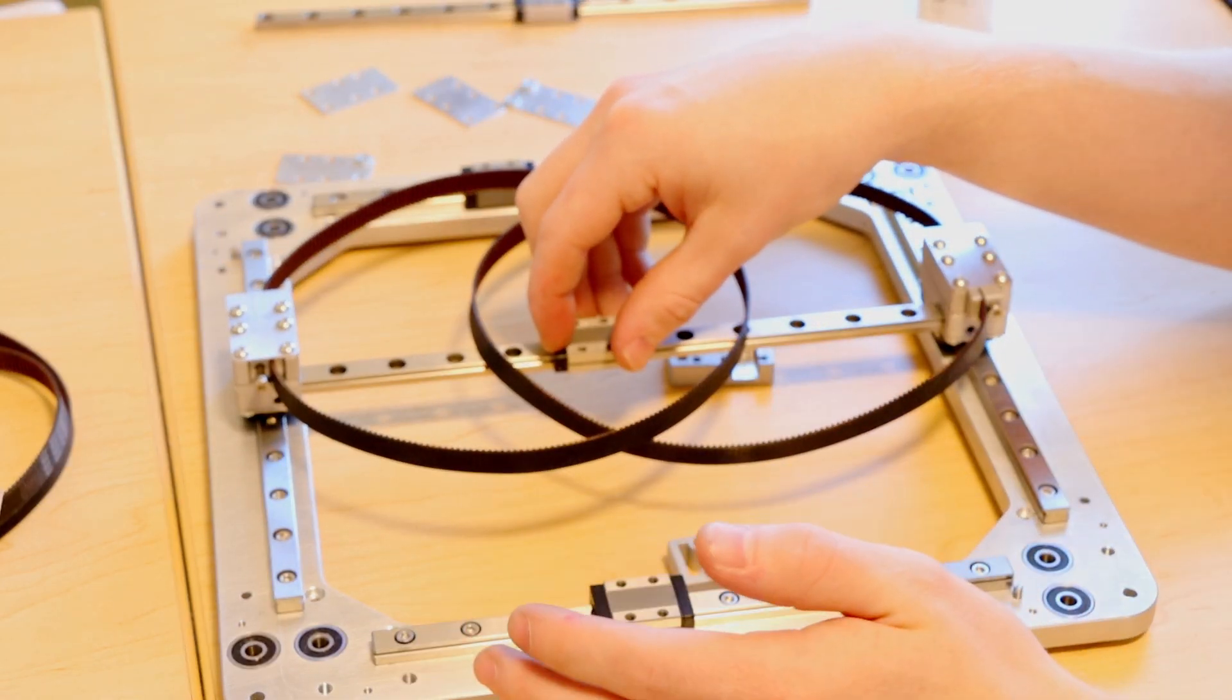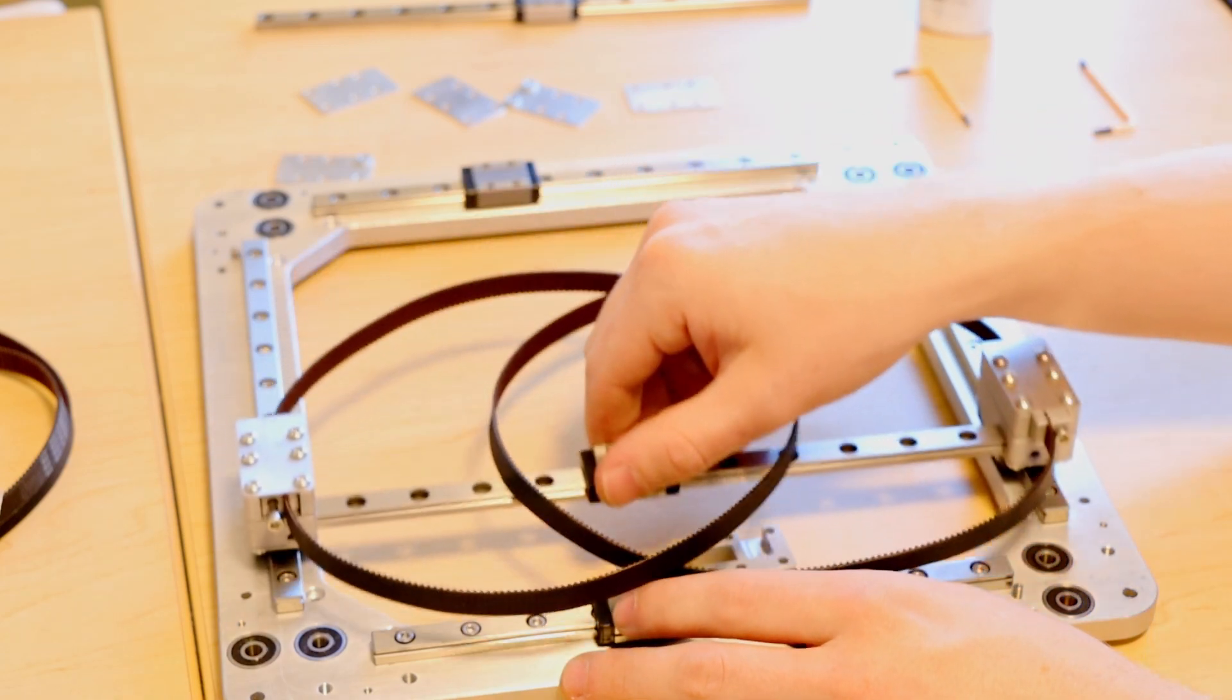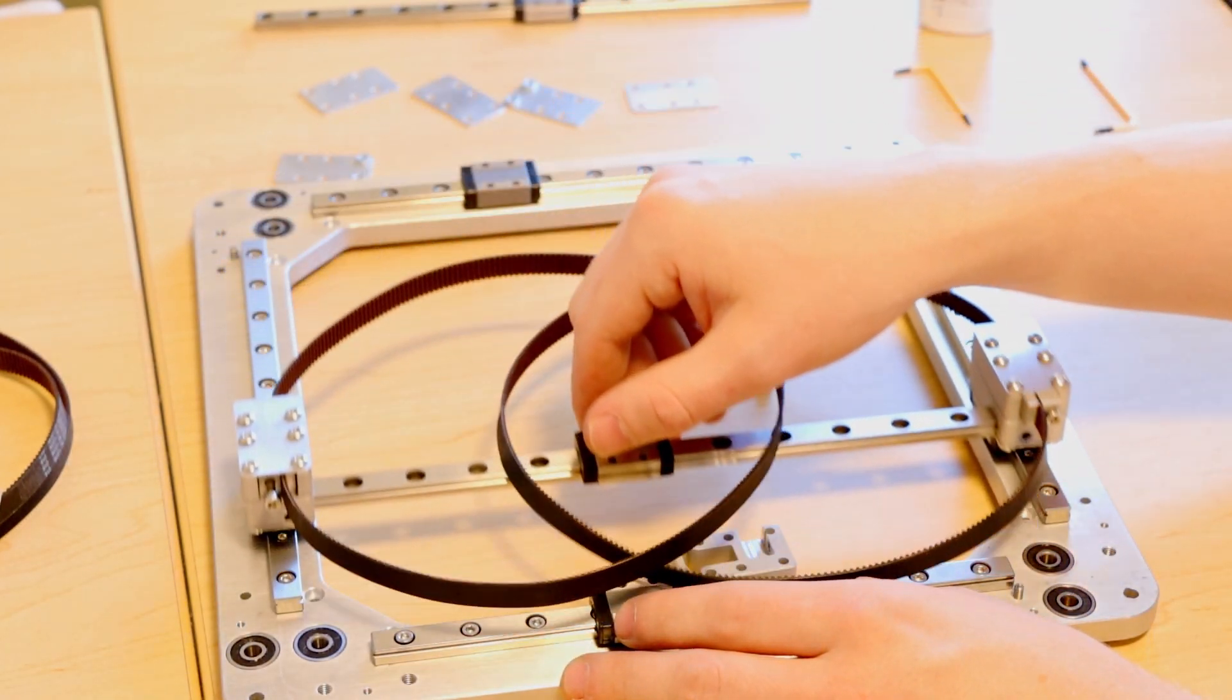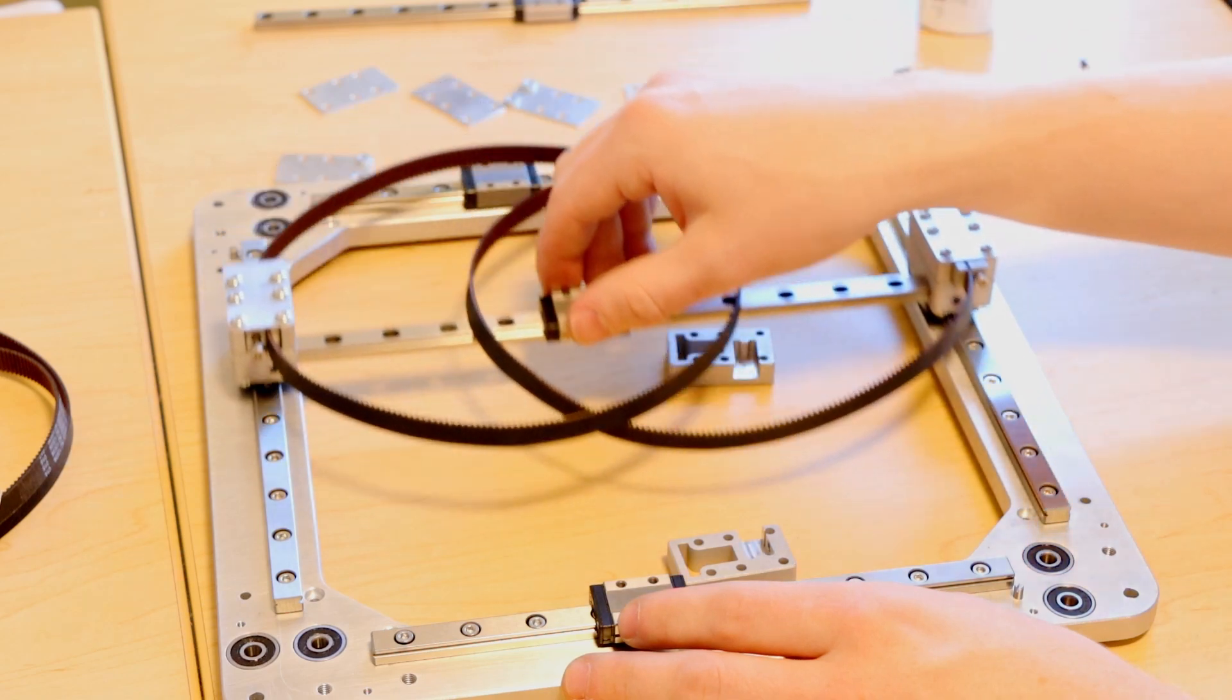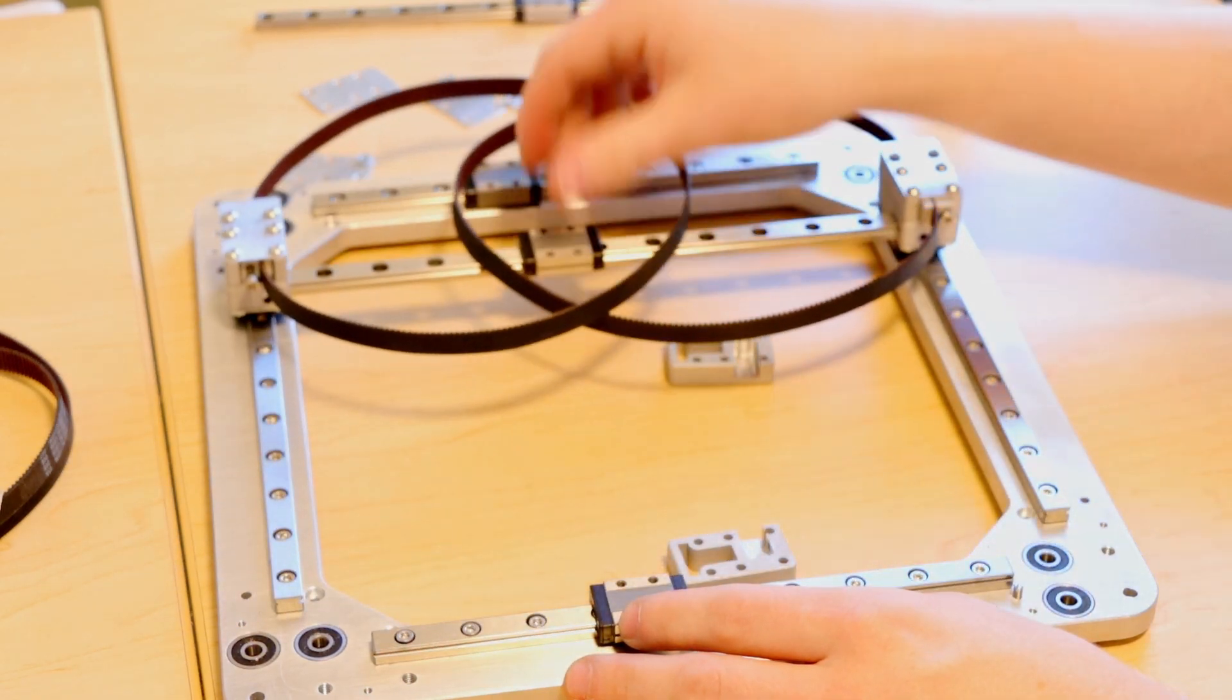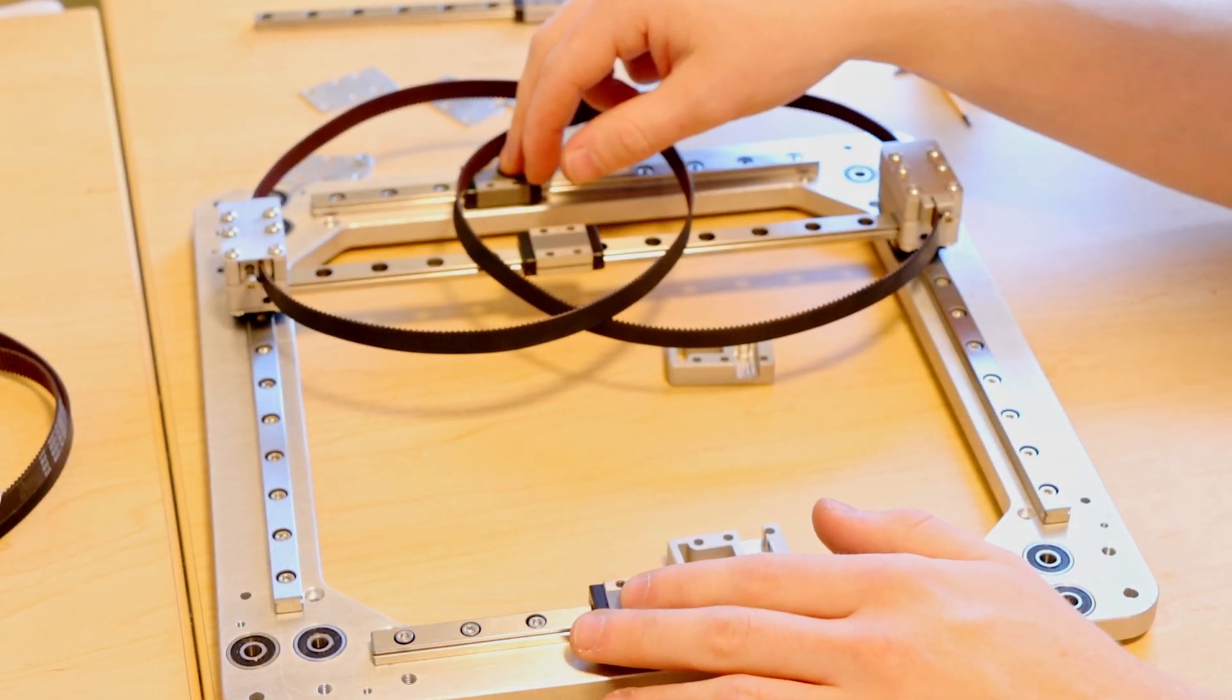I am going to go back in and add some Loctite to all these bolts. But what we can see is that there are no spots where the rail is binding and the entire axis feels very smooth. So now we just have to repeat that for the other axis going in the other direction.